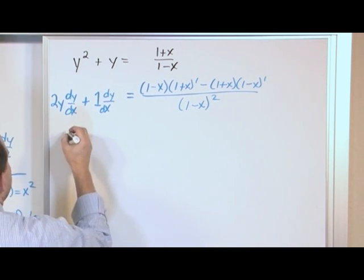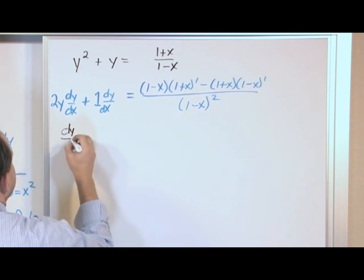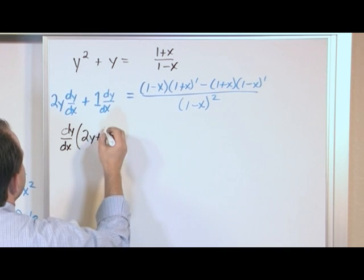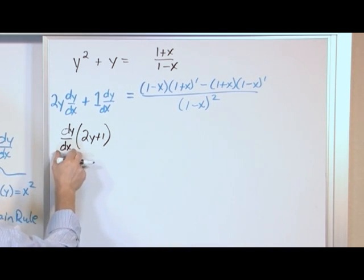So let's factor this guy out. We'll have a dy dx, and on the inside, we'll have a 2y plus 1. The reason we're factoring it out is because we want to solve for dy dx. That's what we're trying to find.